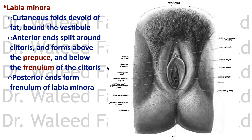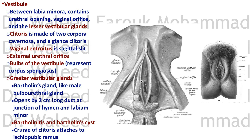The labia minora are cutaneous folds devoid of fat — they have no fat, only erectile tissue bound to the vestibule. Anteriorly, each labium minus splits to form the prepuce above the clitoris and the frenulum of the clitoris below it. Posteriorly, the two labia minora unite to form the frenulum of the labia minora.